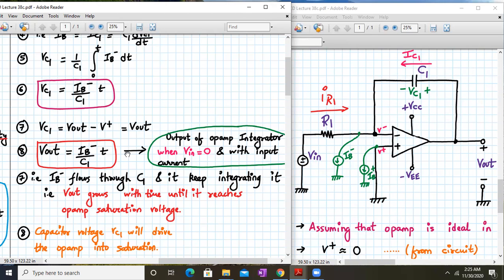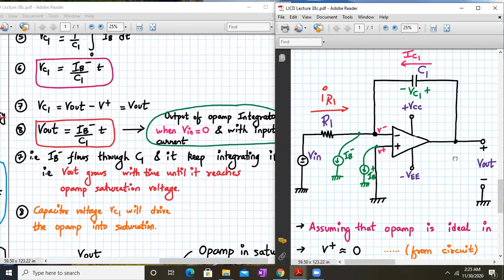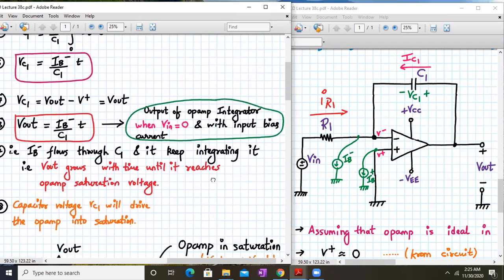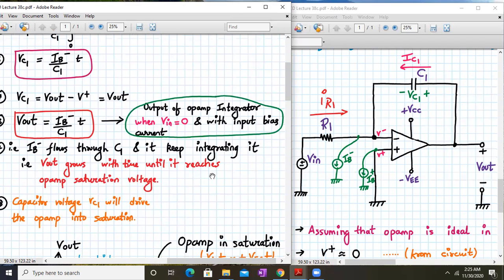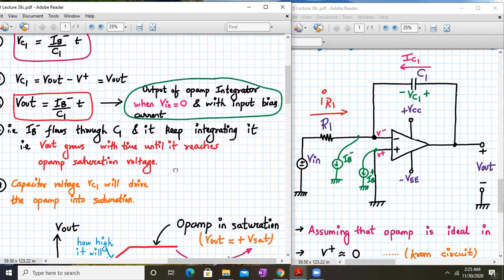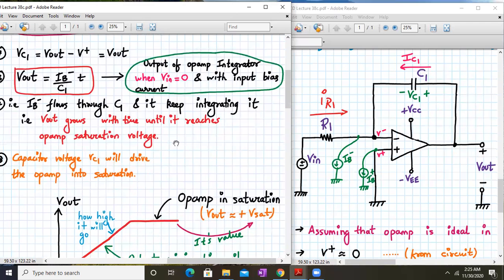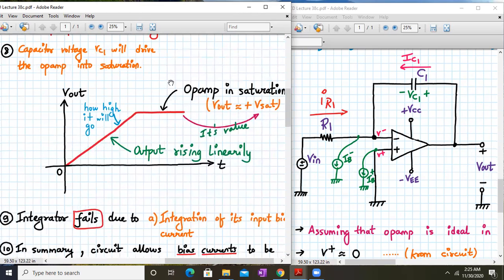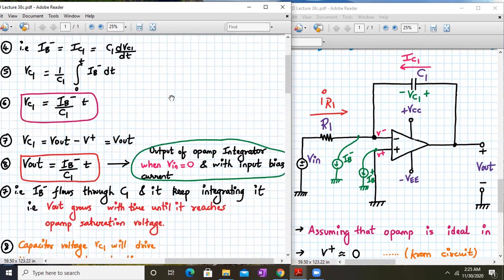Now ib- flows through capacitor c1, keeping it integrating, that is vout grows with time until it reaches the op-amp saturation voltage. So the capacitor voltage vc1 will drive the op-amp into saturation.